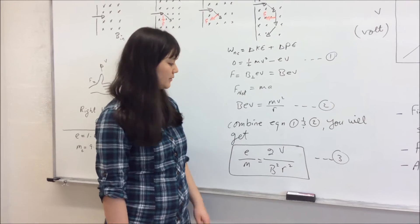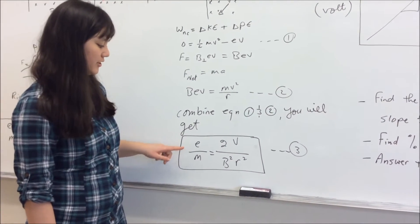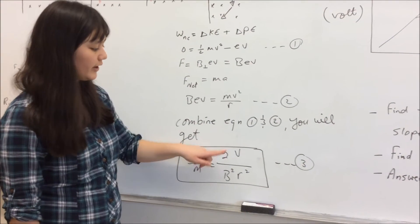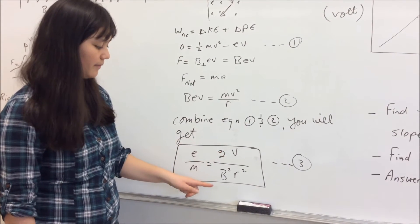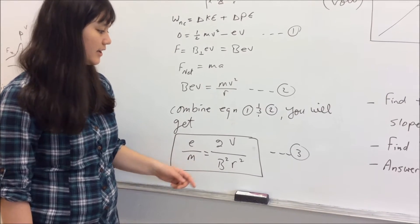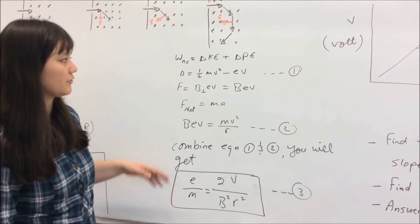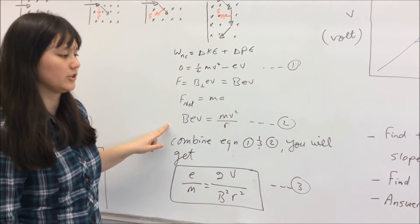We're going to use equation number three to determine the ratio of the charge of the electron to the mass of the electron, where V represents the voltage, B represents the magnetic field, and R represents the radius. You're going to derive this equation by using equation one and equation two.